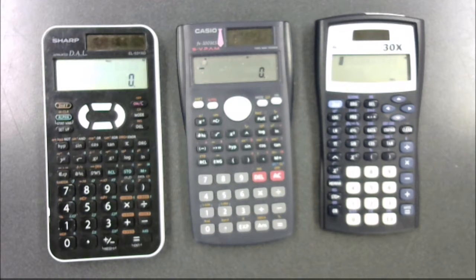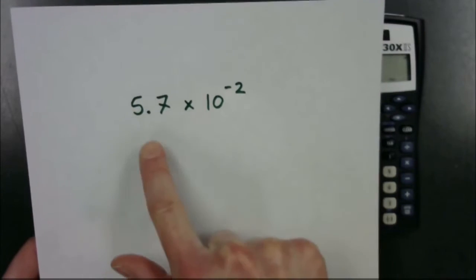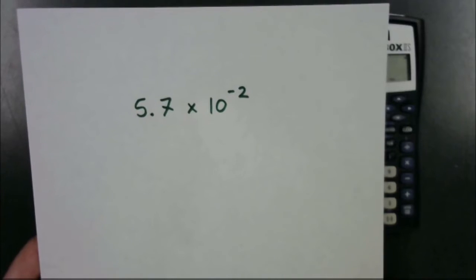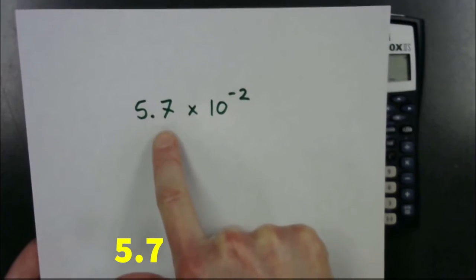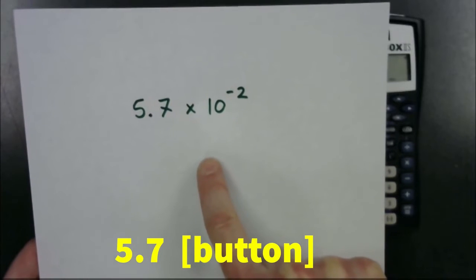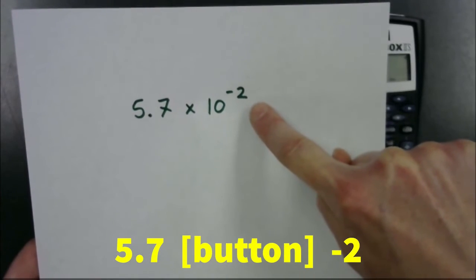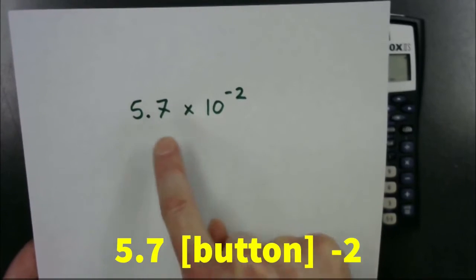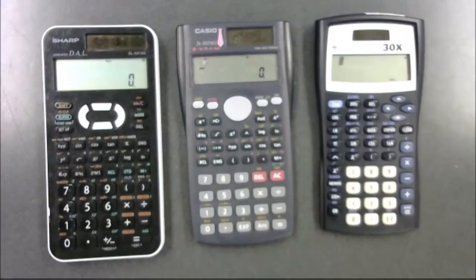Now that we've located the scientific notation button, how do we use it? Let's use 5.7 times 10 to the power of negative 2 as our example. To type this in, first type 5.7, then press the scientific notation button, then immediately type minus 2. You skip over the 'times 10 to the power of' part — it's just 5.7, scientific notation button, minus 2.